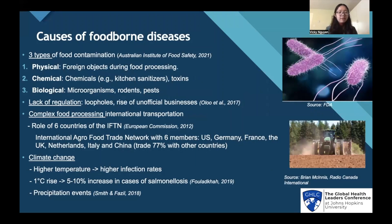Foodborne diseases are caused by food contamination, which is sorted into three types: physical, chemical, and biological. Physical contamination is caused by foreign objects during food processing. Chemical contamination is caused by chemicals such as kitchen sanitizers and toxins entering food. Biological contamination is caused by microorganisms such as bacteria and viruses, rodents, and pests. There is also the lack of regulation, which can give rise to loopholes and unofficial food businesses, which are very difficult for governments to control. There is also the complex food processing trade for international transportation.